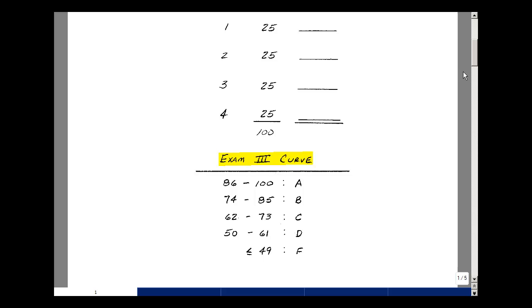86 to 100 is an A, 74 to 85 is a B, 62 to 73 is a C, and 50 to 61 is a D. Less than or equal to 49 was not a passing grade.